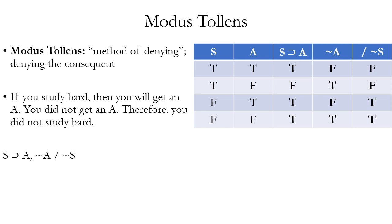A second very common valid argument form is modus tollens — Latin for 'mode of denying.' Like modus ponens, one premise is a conditional, but the other premise negates the consequent of that conditional (denying the consequent). Ordinary language example: 'If you study hard, then you will get an A. You did not get an A, therefore you did not study hard.' The truth table shows no row with true premises and a false conclusion, confirming it is a valid argument form.